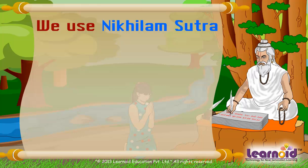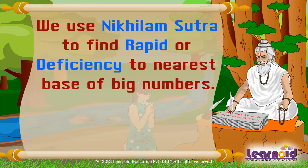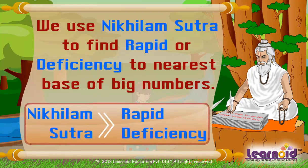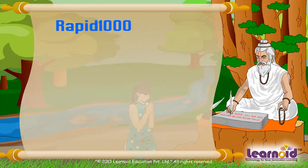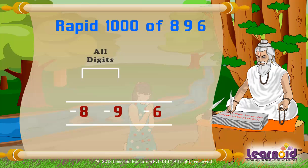We use Nikhilam Sutra to find the rapid or deficiency to the nearest base of big numbers. For example, let's find rapid 1000 of 896. We will write 896 and then apply Nikhilam Sutra, which says all digits from 9 and the last digit from 10.